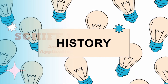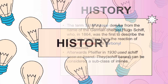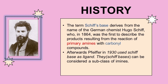The term Schiff base is derived from the name of German chemist Hugo Schiff, who was the first person in 1864 to prepare a product by the reaction of primary amine with carbonyl compounds. The name Schiff base was given to that compound. Afterwards, in 1930, Schiff bases became widely used as ligands.